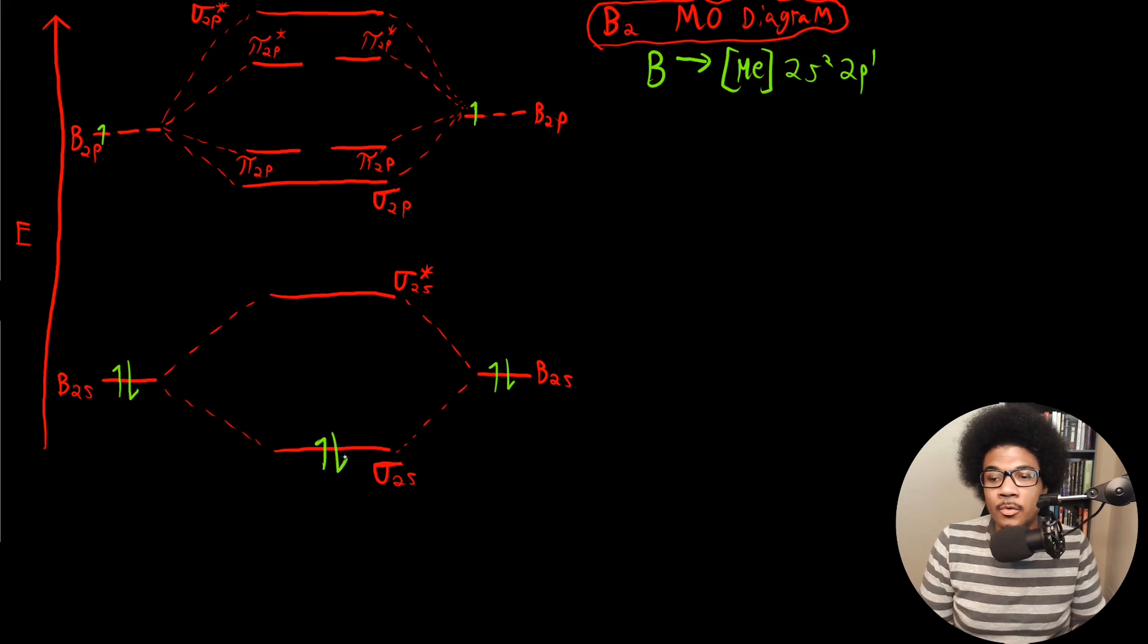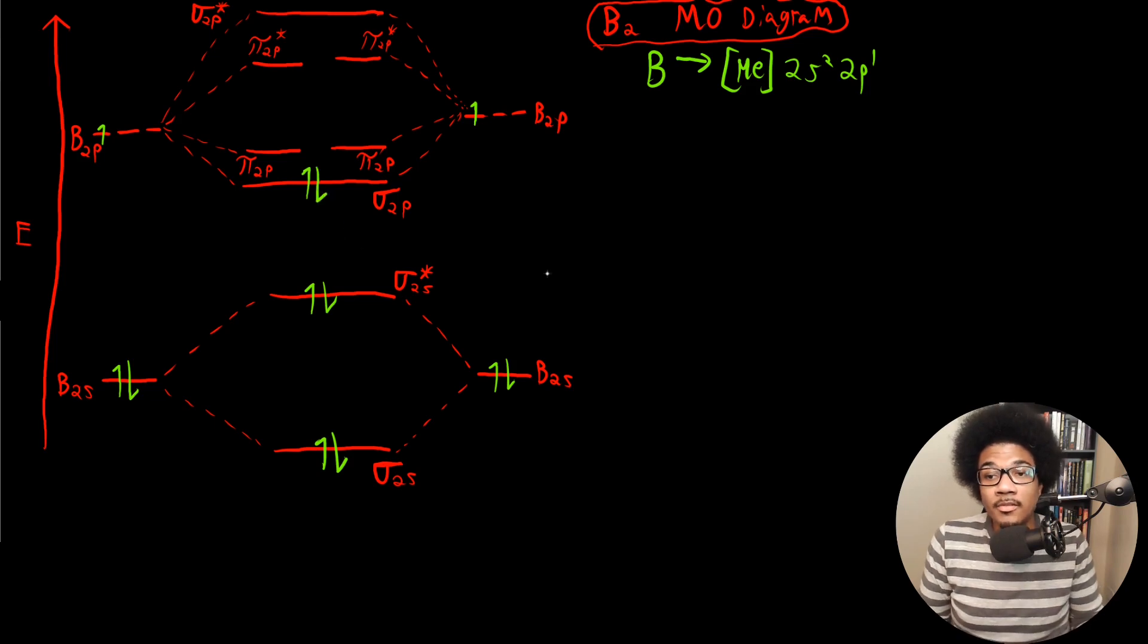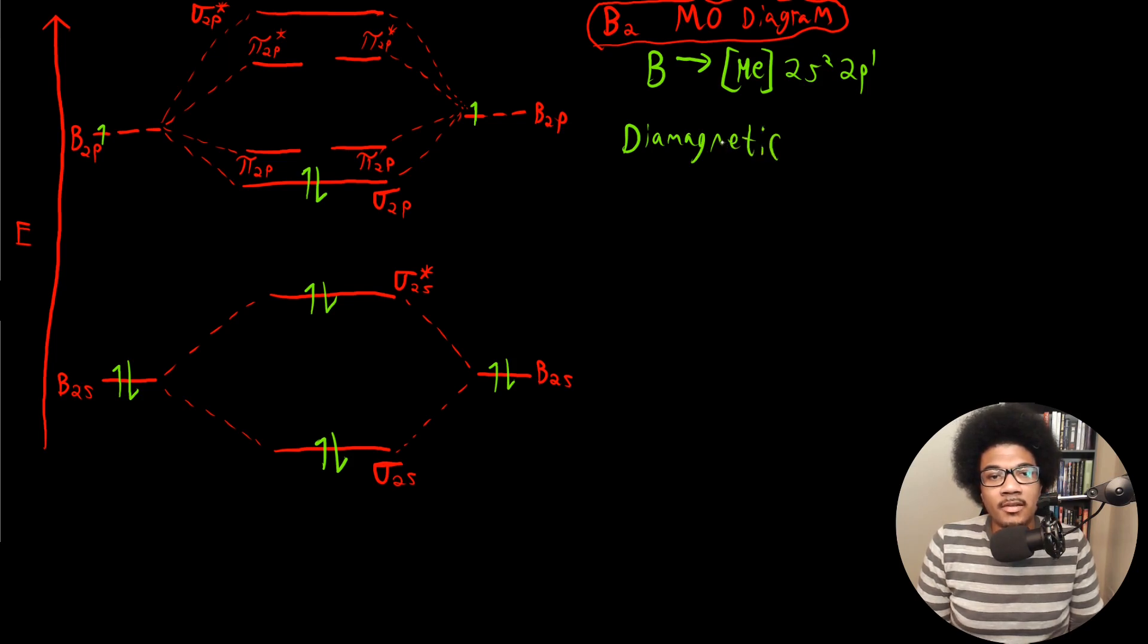So let's put two paired here, two paired here, and then two paired here. So those are our six electrons. Now, if I were to ask you, is this material paramagnetic or diamagnetic, you would look and see, okay, well, in the MO diagram, we don't have any unpaired electrons, so this must be a diamagnetic material. Since we have no unpaired electrons, this material would be diamagnetic.